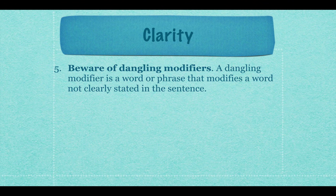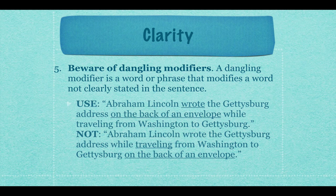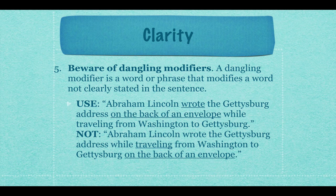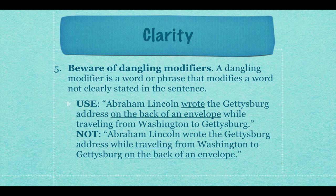Be aware of dangling modifiers — a word or phrase that modifies a word not clearly stated in the sentence. For example: 'Abraham Lincoln wrote the Gettysburg Address on the back of an envelope while traveling from Washington to Gettysburg.' That's clear. But watch what happens with a dangling modifier: 'Abraham Lincoln wrote the Gettysburg Address while traveling from Washington to Gettysburg on the back of an envelope.' Now it's unclear — did he write it on the back of an envelope, or was he traveling on the back of an envelope? All the same words, just organized differently, and 'on the back of an envelope' now modifies 'travel' instead of 'wrote.' Be very careful for these kinds of things when you write.